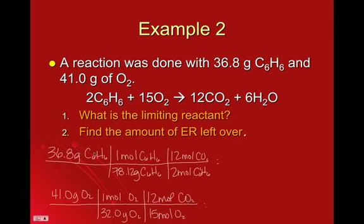And then we plug both of these in. You can do your little cross-outs if that makes you feel better. Sometimes it's kind of fun to cross all this stuff out. So doing the top one, 36.8 times 12 divided by 78.12 and 2, and I get 2.83 up here. And then down on the bottom, 41 times 12 divided by 32 and 15. And I get 1.02.